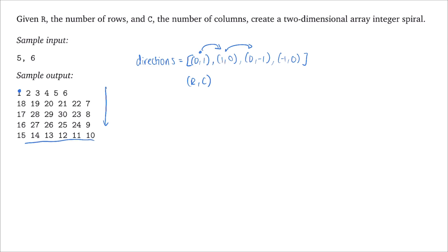We continue traversing, and when we reach the left bound we transfer to the upward direction — going up one row without changing the column. Here's a unique situation: the moment we reach a number that's already populated, we stop and turn right immediately to 19 rather than looping back to 1.